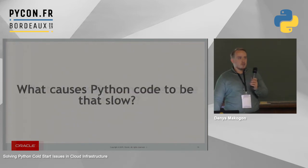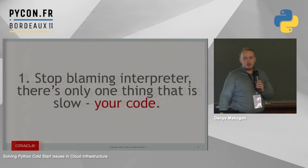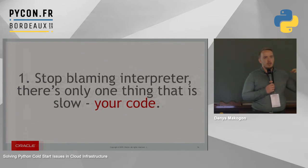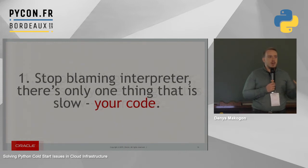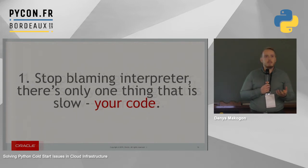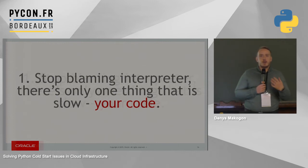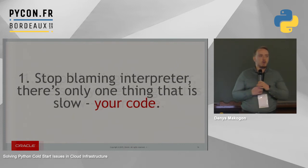So what causes the Python interpreter to go slow? There are a couple of things: interpreter time, your library time, and third-party resources you're talking to. But I'm not here to blame the interpreter — the interpreter itself starts pretty fast, taking almost 200 milliseconds. The rest of the time is your code. So stop blaming the interpreter every time your code is slow, whether on startup time or execution time — it's all your code, it's your own fault.